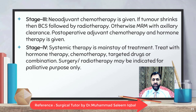Stage 3 treatment: neoadjuvant chemotherapy is given first; if the tumor shrinks, breast conservative surgery followed by radiotherapy is performed; otherwise, modified radical mastectomy with axillary clearance is done, followed by adjuvant chemotherapy and hormone therapy. Stage 4: systemic therapy is the mainstay — hormone therapy, chemotherapy, targeted drugs, or a combination. Surgery or radiotherapy may be indicated for palliative purposes.